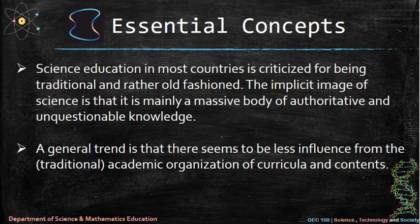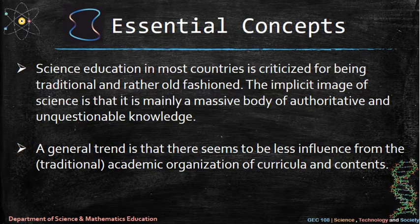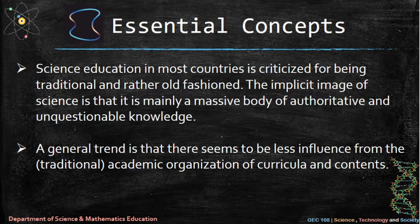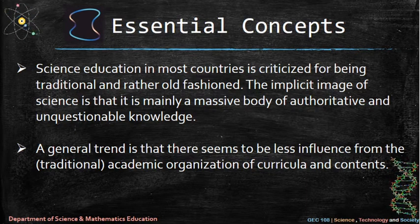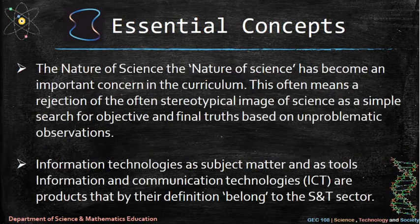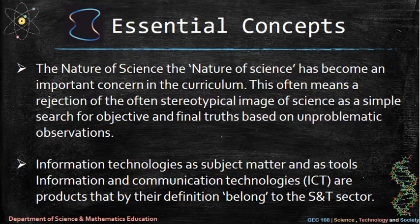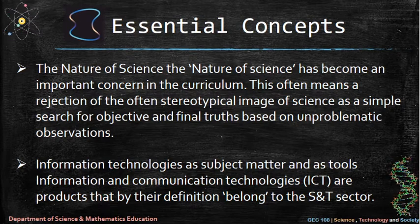Nine: science education in most countries is criticized for being traditional and old-fashioned. The implicit image of science is that it is mainly a massive body of authoritative and unquestionable knowledge. Ten: a general trend is that there seems to be less influence from the traditional academic organization of curricula and contents. Eleven: the nature of science has become an important concern in the curriculum, often meaning a rejection of the stereotypical image of science as a simple search for objective and final truths based on unproblematic observations.